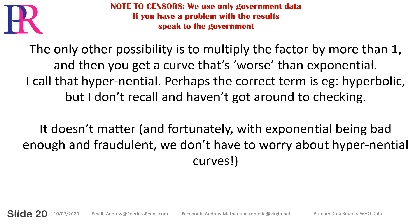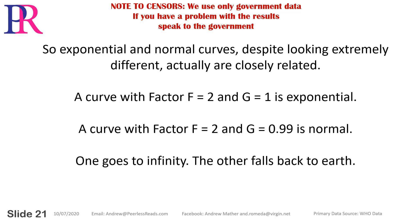Perhaps the correct term for hyponential is hyperbolic, but it doesn't matter. Fortunately, with exponential being bad enough and already fraudulent, we don't have to worry about hyponential curves. So exponential and normal curves, despite looking extremely different, are closely related. A curve with factor f equals 2 and g equals 1 is exponential. A curve with f equals 2 and g equals 0.99 is normal. One goes to infinity; the other falls back to Earth.